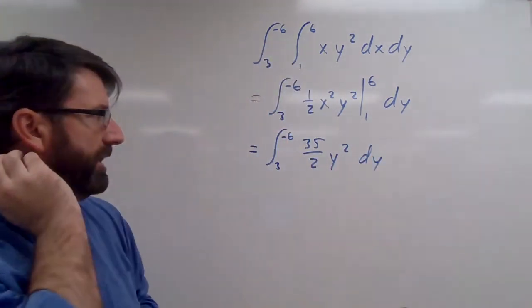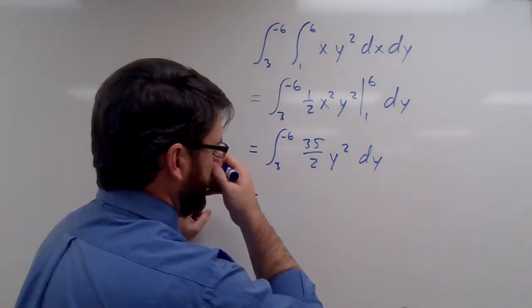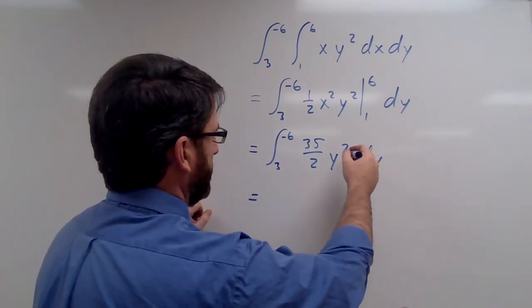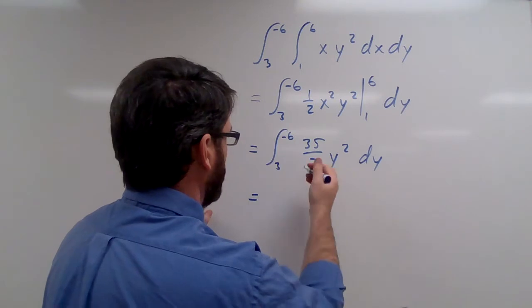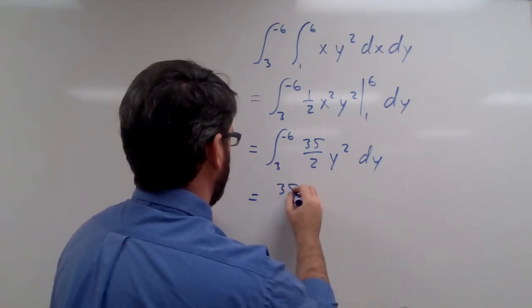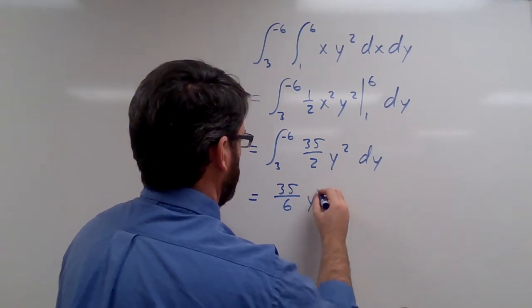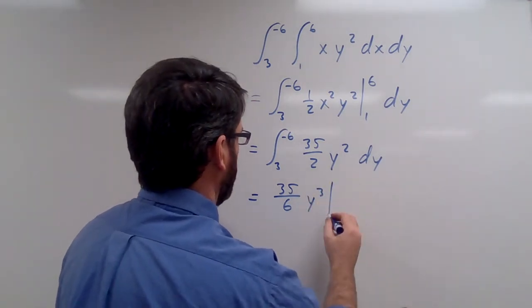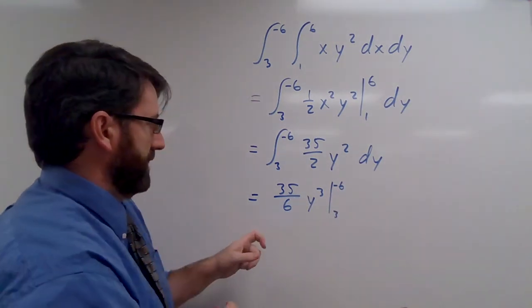All right, and now let's integrate this with respect to y. That's going to be y cubed, divide this by 3, so this is going to be 35 over 6 y cubed. And it's going to be evaluated from 3 to negative 6.